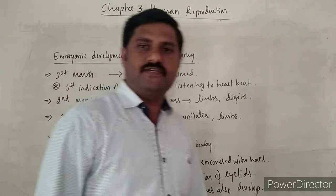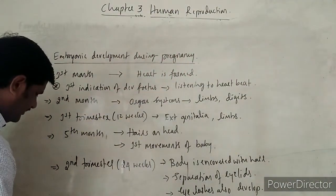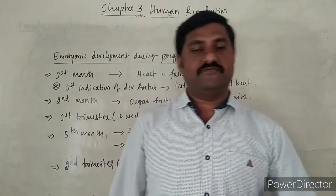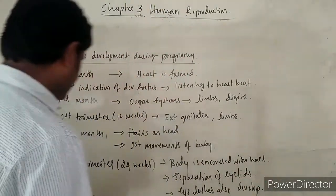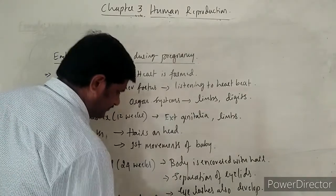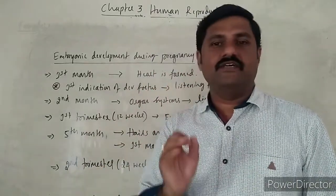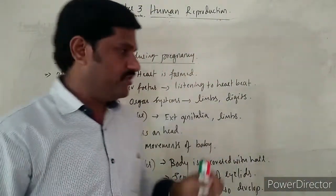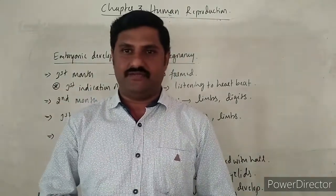In the ninth month, the baby is fully developed and the fetus is ready for delivery. These are the key events of embryonic development as covered in the NCERT. After this, we will go to the last part of this chapter, that is parturition as well as lactation.